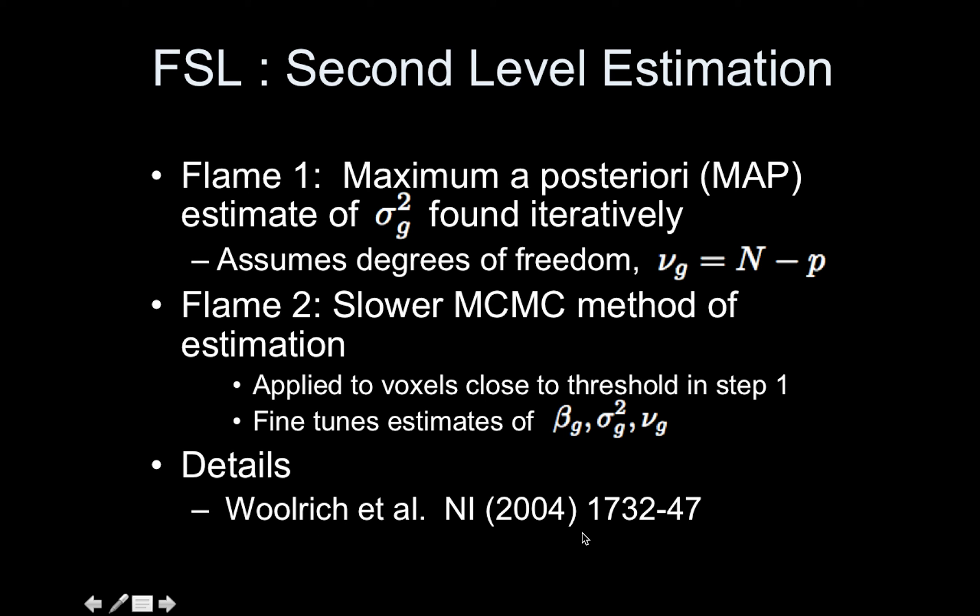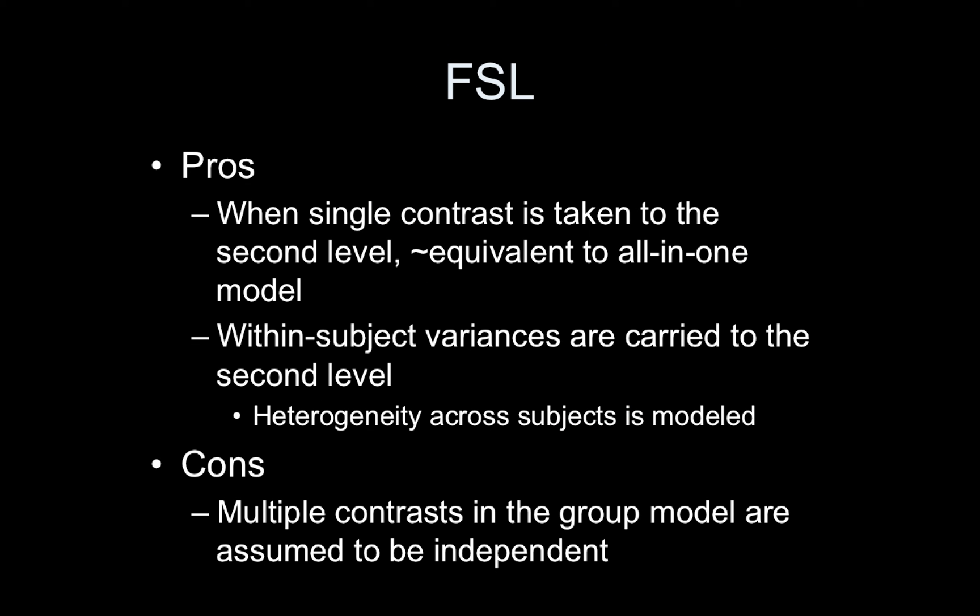Pros of FSL: when a single contrast is taken to the second level, it's almost equivalent—there's a little wiggly—it's approximately equivalent to an all-in-one model. The actual all-in-one model iteratively estimates the betas and the variances back and forth. Here we're not doing that. We're not updating the beta estimate and then estimating all the variance terms. The other pros: within-subject variances are carried to the second level. Part of the cool things about this model is that if you have heterogeneity, if you have a noisy subject, they get down-weighted. That will happen here in FSL. In SPM all the subjects are treated as equally good subjects.